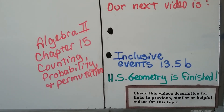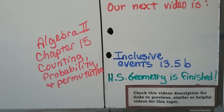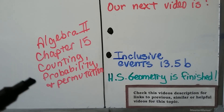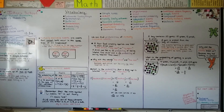Our next lesson is going to be the second part of this one about inclusive events, lesson 13.5b. Then we're finished with high school geometry. I'll have a link to my Algebra 2 Chapter 15 Counting and Probability and Permutations playlist in the description to help you. Remember: mutually exclusive events are events that cannot both occur in the same trial of an experiment — they're separate from each other. A simple event is just a single outcome, and if we have two simple events we can make a compound event — it's two or more simple events.